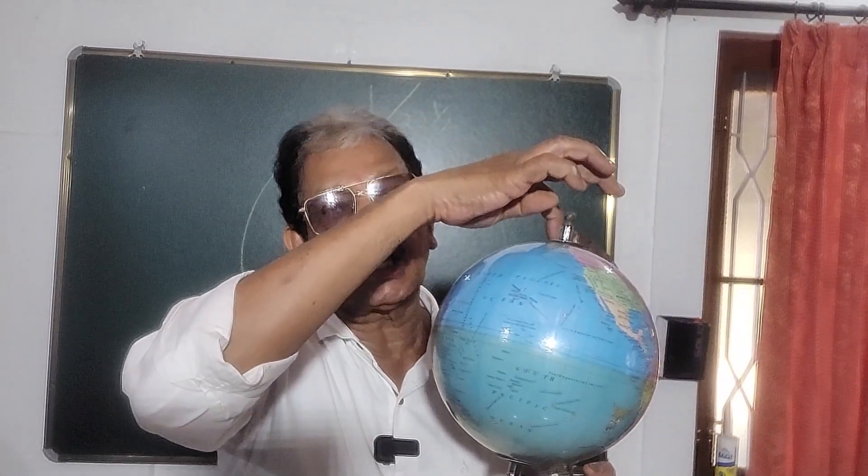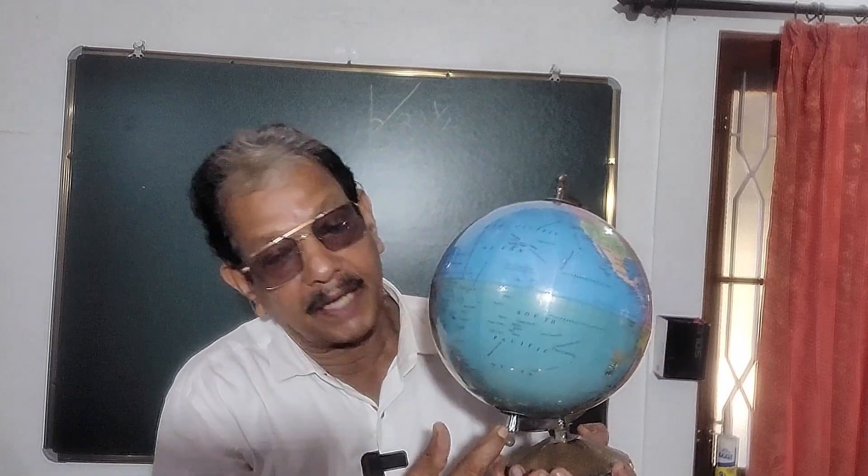If you take equal distance from the south pole and the north pole, it will come through the center — the middle of the earth. That is the equator. How is the equator calculated? We take equal distance from the north pole and the south pole, and the line passing through the middle is the equator.